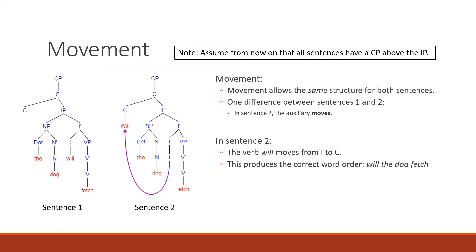This is a solid pattern: you have a CP, then an IP with a specifier that goes to I-bar which has an auxiliary, and then a verb phrase next to it. The auxiliary 'will' moves from I up to C in order to create a question — that's what the purple line represents. There is also a little 't' underneath the I, which stands for trace — our indication that something was there and moved somewhere else.